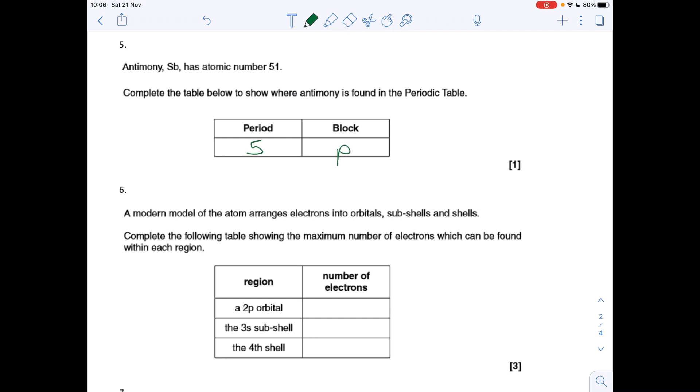Question six: typical question this, catches a lot of people, especially the first one. A 2p orbital—the focus there is the word orbital. Doesn't matter what kind of orbital you've got, maximum number of electrons is always two. Common wrong answer would be six because students just think p subshell, six.